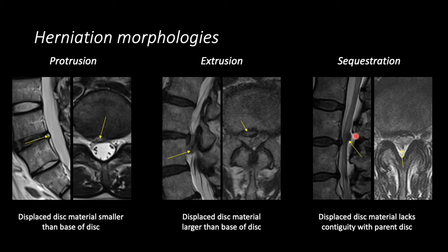Herniations can occur in different locations with respect to the spinal canal, best viewed on axial images. The central zone is situated between the medial margins of the facet joints. The subarticular zone, or lateral recess, is situated between the medial margin of the facet and the medial margin of the pedicle. The foramen is situated between the medial and lateral margins of the pedicle, and the extra-foraminal zone is lateral to the pedicle.